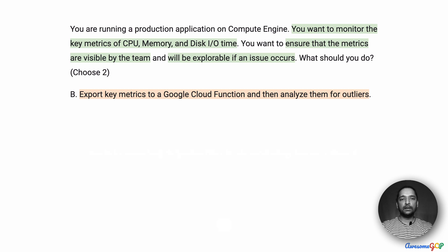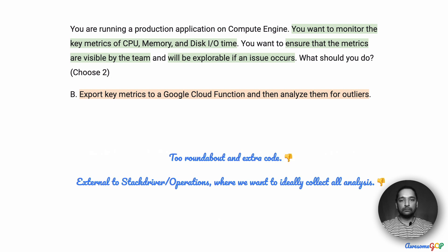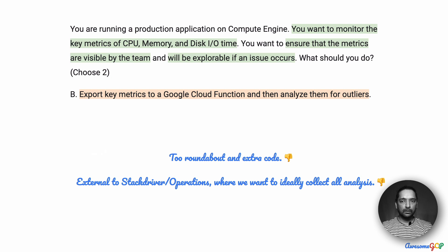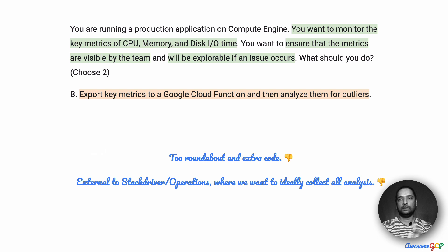Option B suggests that you export key metrics to a Google Cloud Function and then analyze them for outliers. This just seems roundabout and requires extra code. We would need the metrics to come into Stackdriver Monitoring, then export to Cloud Storage or Pub/Sub, and then route through a Cloud Function to analyze with custom code — just too much effort. Moreover, the visualization or analysis of these metrics would happen outside of the default system. If we could use Stackdriver for it, that would be the first preference. We don't want to create a custom application or have operations people move out to a different environment. So we will eliminate option B.